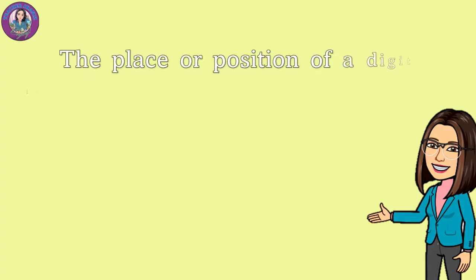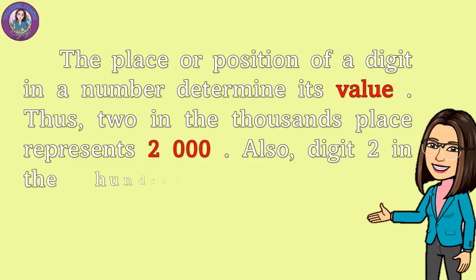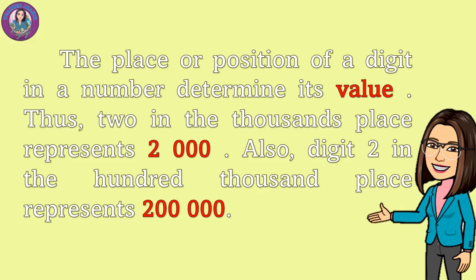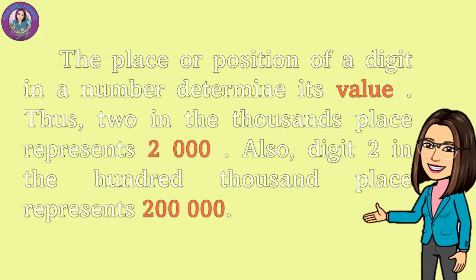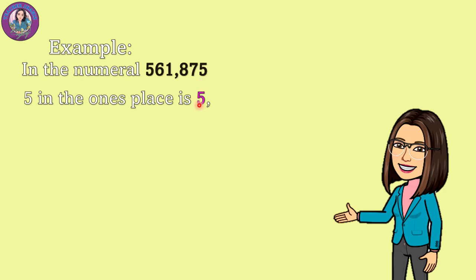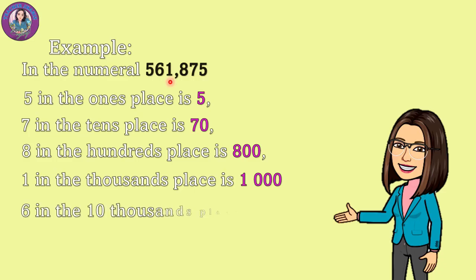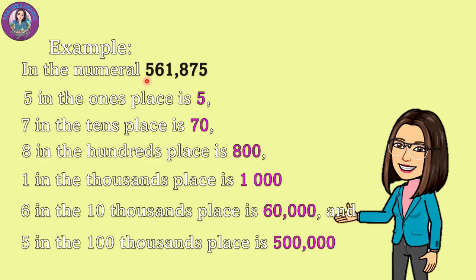The place or position of a digit in a number determines its value. For example, in the numeral 561,875, the value of 5 in the ones place is 5, the value of 7 in the tens place is 70, the value of 8 in the hundreds place is 800, the value of 1 in the thousands place is 1,000, the value of 6 in the ten thousands place is 60,000, and the value of 5 in the hundred thousands place is 500,000.